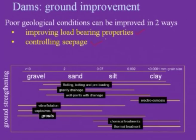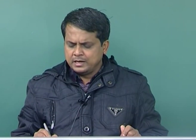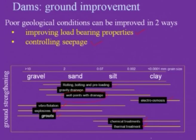For sand and silt, rolling, bolting, and preloading are done to strengthen bearing properties, along with gravity drainage and well point drainage. For gravels, vibro-flotation, explosives, and grouts can be used for ground improvement. For a mixture of silt and clay, chemical or thermal treatment is applied. For purely clay soils, electro-osmosis is used.